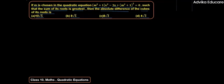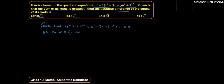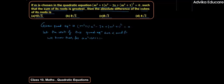If you know the formula for sum of roots and product of roots, then you can easily solve this question. Before solving, let's write the given quadratic equation: (m² + 1)x² - 3x + (m² + 1)² = 0. Let the roots of this quadratic equation be alpha and beta. We know that for ax² + bx + c = 0 having roots alpha and beta, alpha + beta = -b/a and alpha·beta = c/a.